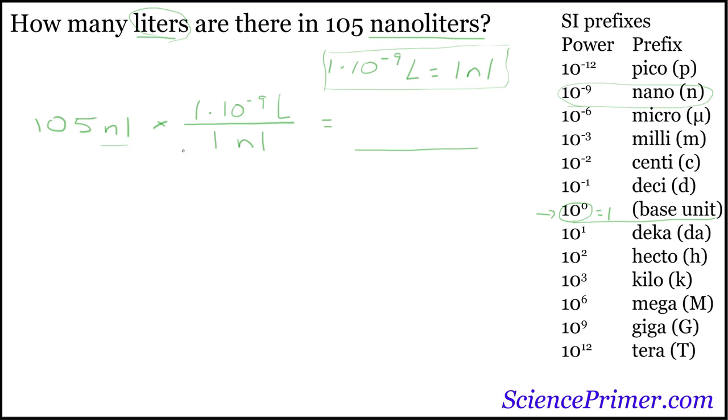Then just by solving this equation and keeping track of our units, we should get what we want. Let's deal with the units first. Nanoliters cancel because we've got a nanoliter in the numerator and in the denominator. The only unit we're left with is liters, which is what we are looking for. So far, so good.